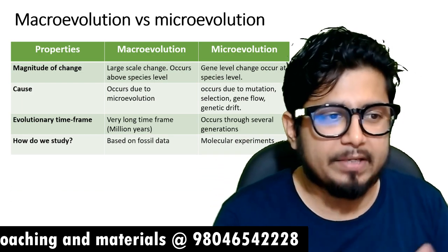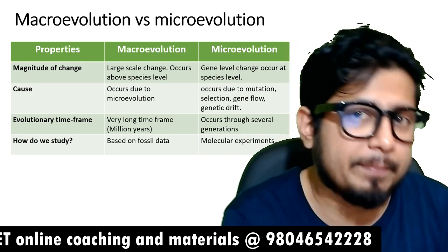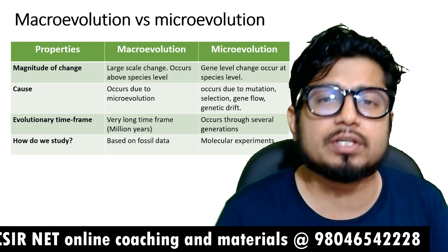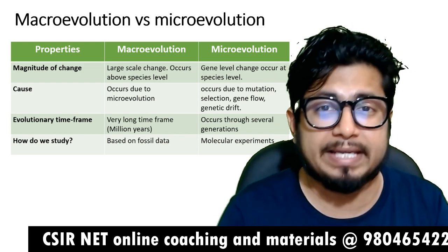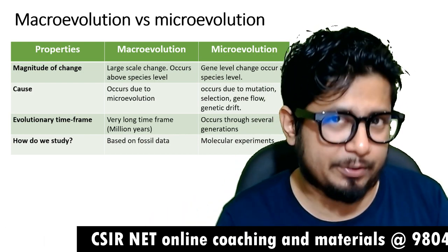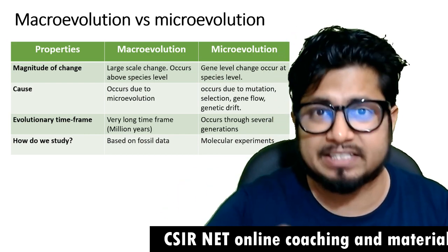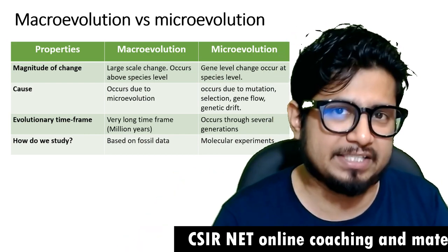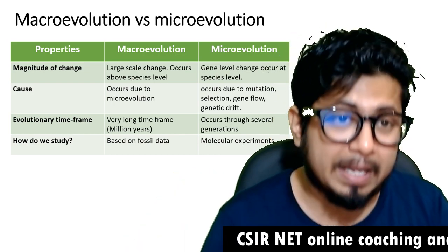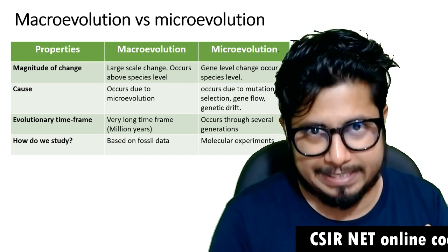Then we have the study. How do you study micro and macroevolution? We study microevolution by molecular experiments because we are looking at the changes in the DNA sequences. We can check DNA fingerprinting and repetitive DNA sequences in the organism's genome, while macroevolution is based on fossil data.